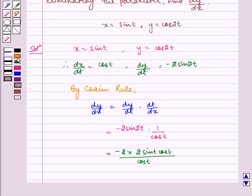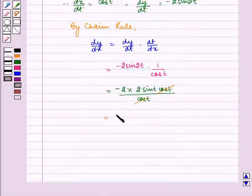Now we see that cos t and cos t cancel. So it equals minus 4 sin t.